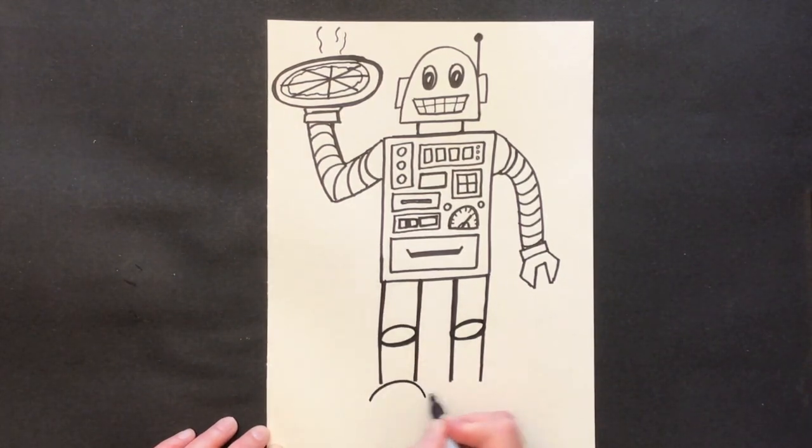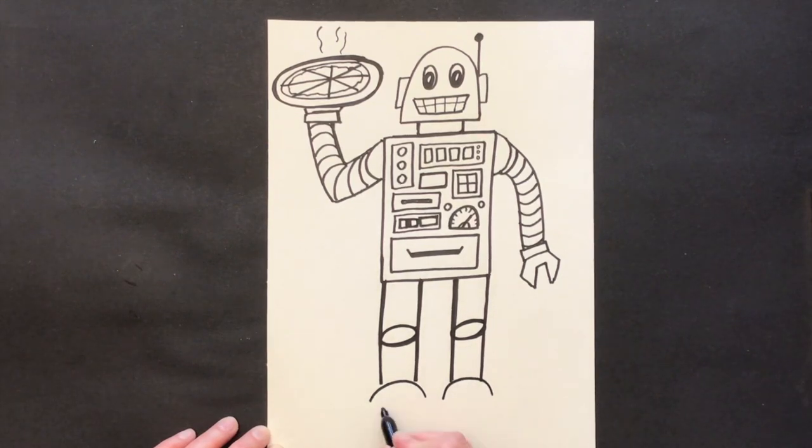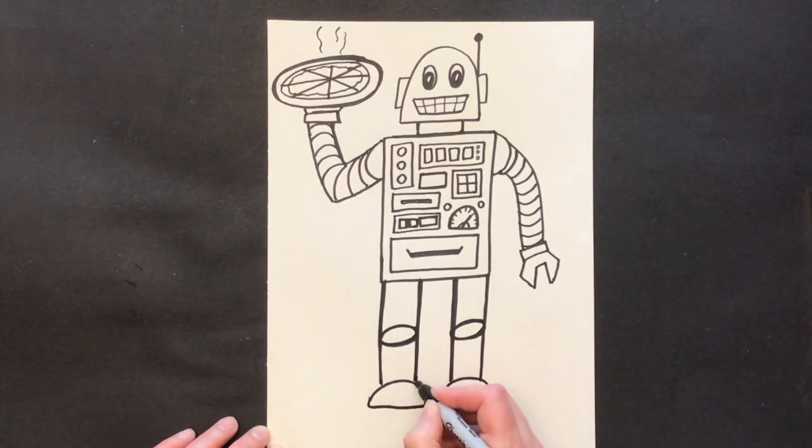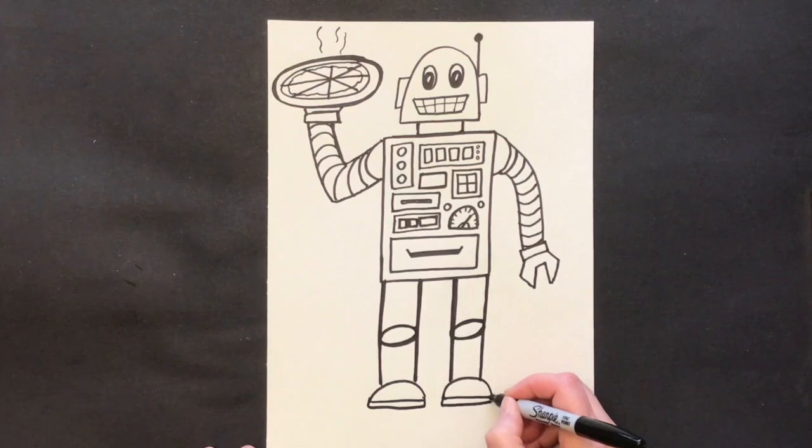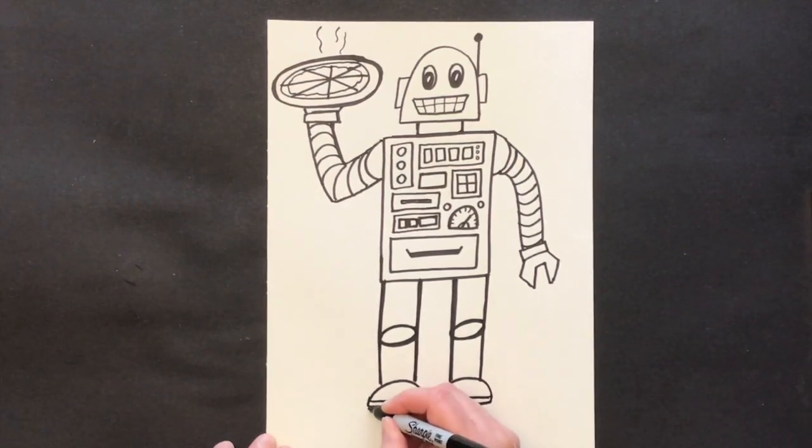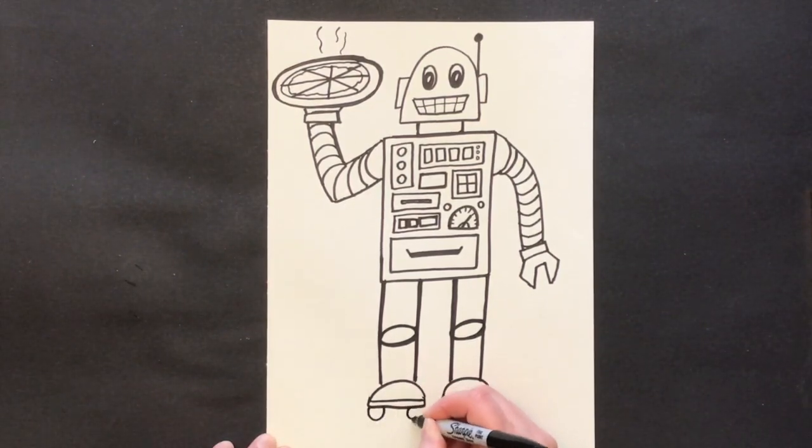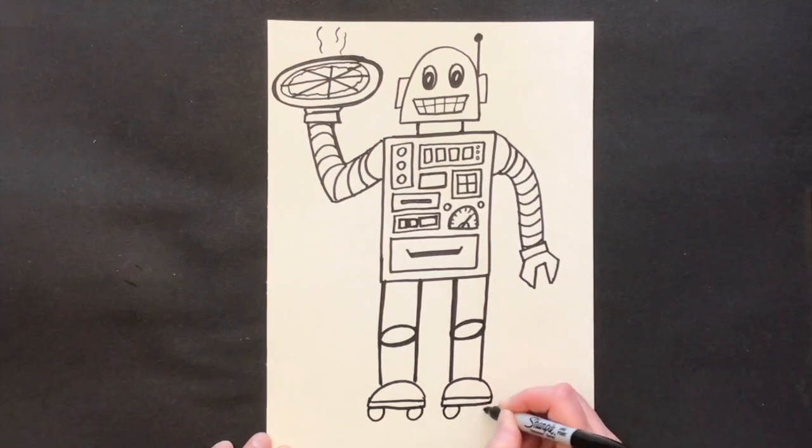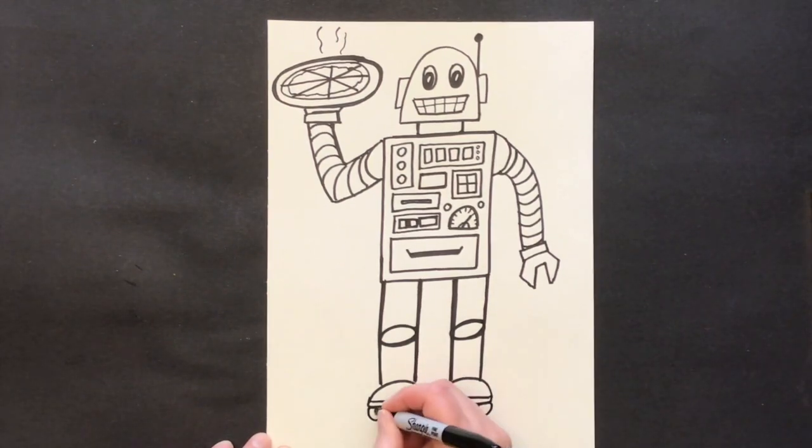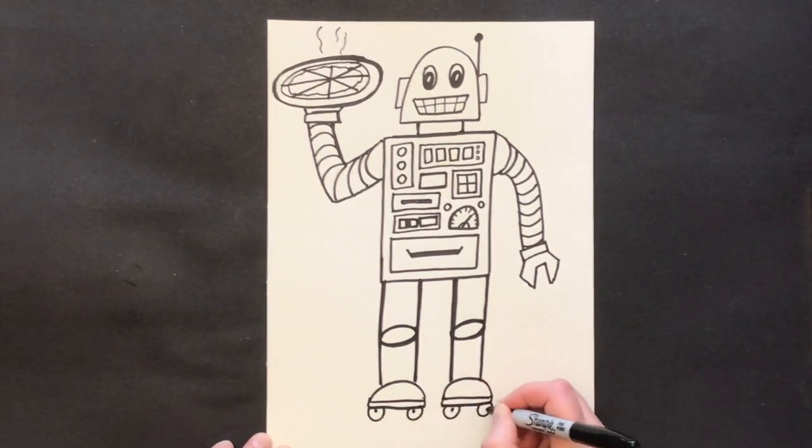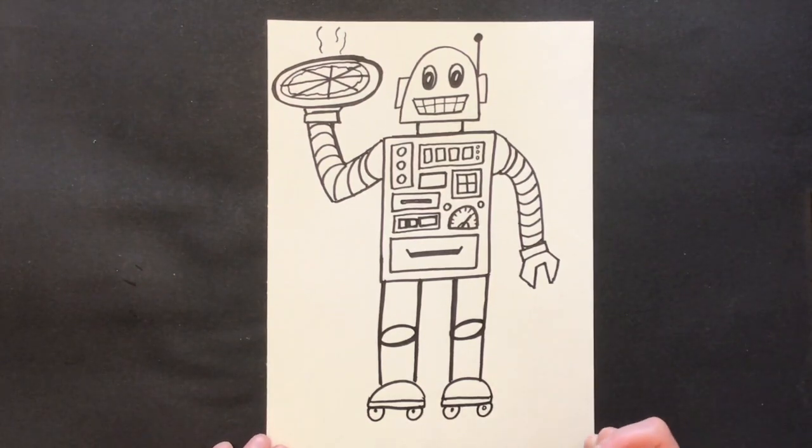And half circle feet. I'm going to put some roller skates on these shoes. So I'm going to draw some little wheels down here. That way I can make sure my robot can move fast and bring me that pizza while it's still hot.